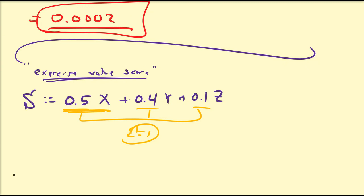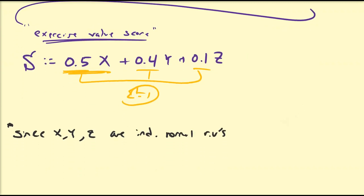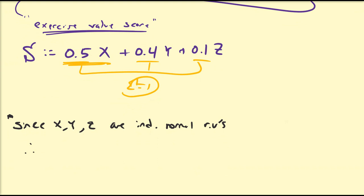Since X, Y, and Z are independent normal random variables, and S is a linear combination of those independent normal random variables, S also is a normal random variable. So we can compute probabilities on S — for example, what is the probability that your exercise value score is bigger than 20 or some other value.